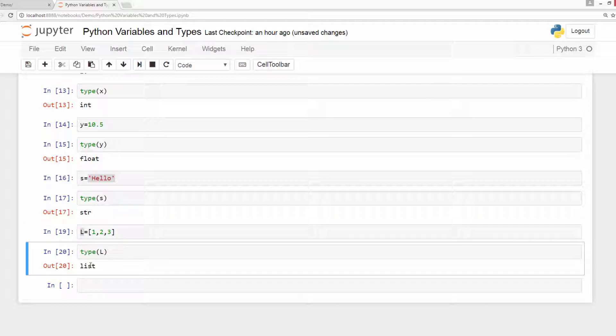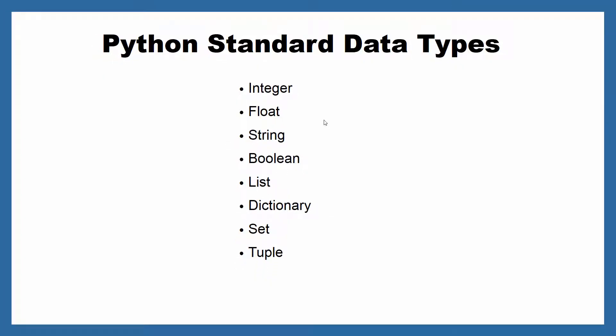There are many types in Python. I'm going to show you the list of types we are going to study. I will also show you how to create your own data type. These are Python's standard data types: integer, float, string, and so on. We will study all of these types. I will also explain why we need different data types in another video. The main takeaway from this video: how to define a variable — each variable has a name, a value, and a type, and the type is figured out by the interpreter based on the value.